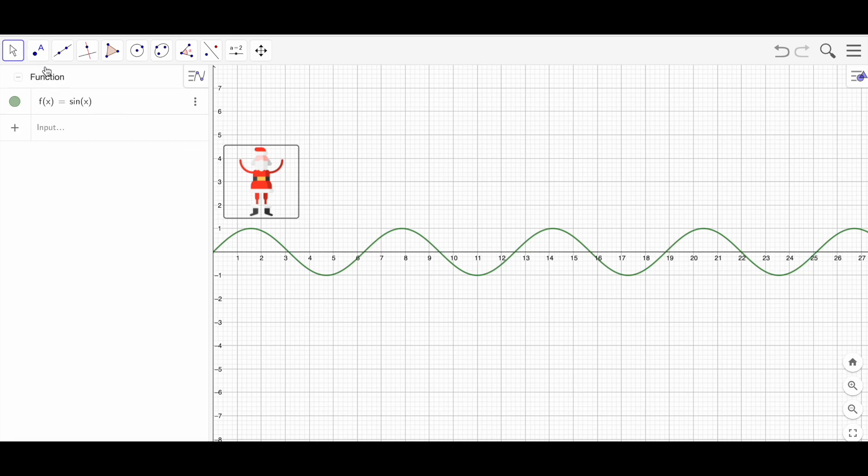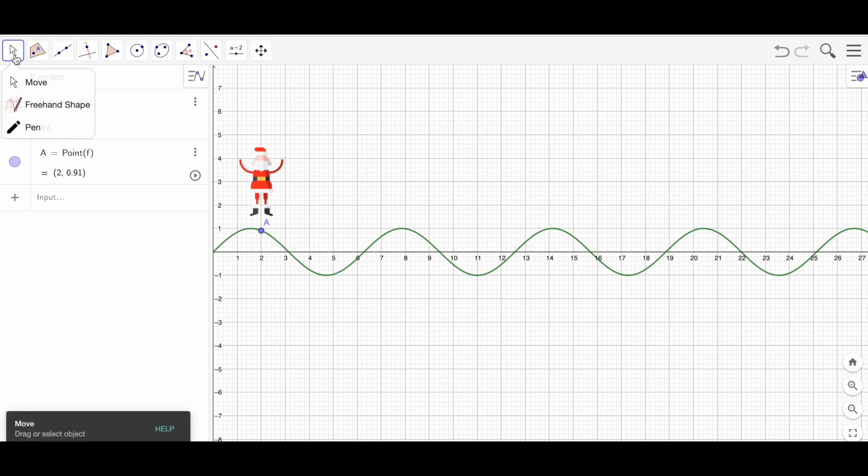Just go here to point, point on object, click anywhere on the curve, go to move, and then slightly move this point slowly so that you can see that it is only on the curve.